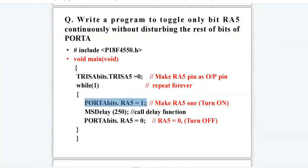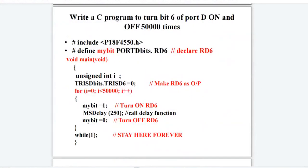For that, we have used the instruction PORTAbits.RA5 equals to 1. Here, we will make the RA5 pin 1. After that, we will call a delay of 250 milliseconds. In the next instruction, we will make RA5 0.